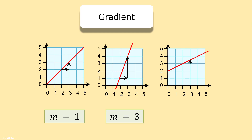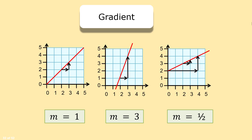Choose any two points. The vertical change is a half and the horizontal change is 1, and a half divided by 1 is a half. We can choose other points as well — the vertical change is 2 and the horizontal change is 4, which is also a half. Do you notice that the bigger the gradient, the steeper the line?